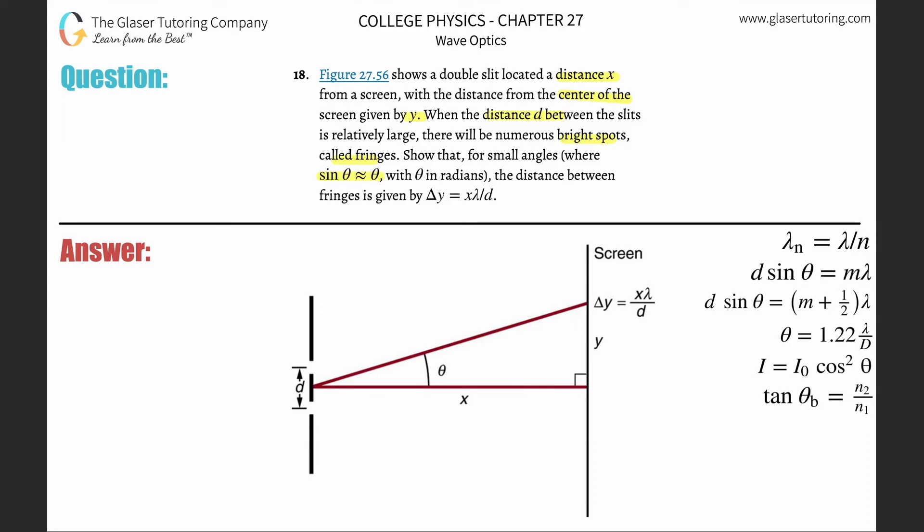Alright, so we're just going to run through this. Assume over here that you know this is constructive interference, there's a bright spot here and a bright spot there. So I can create a formula for the bright spot here.